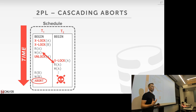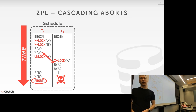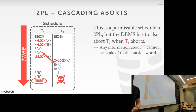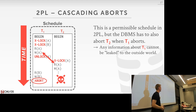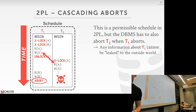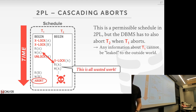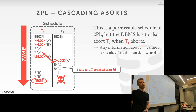The reason cascading aborts are a problem is wasted work. T2 could have done a bunch of complex operations on the system, and now it all has to be rolled back. This increases rollback complexity — more stuff needs to be rolled back just because one transaction aborted, causing a domino effect. This is a valid schedule under two-phase locking, but information from T1 leaked to the outside world even though it aborted, which we can't allow.